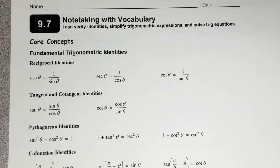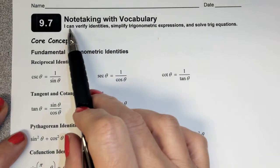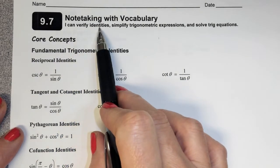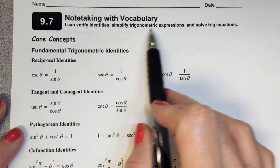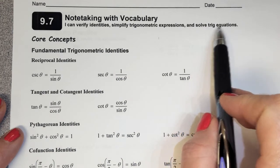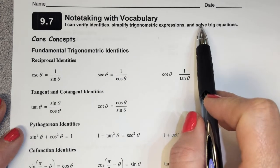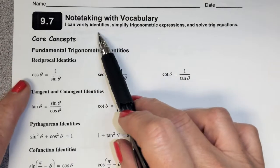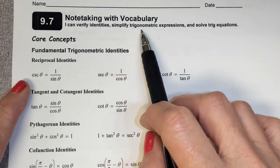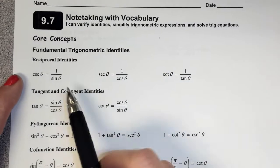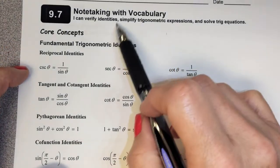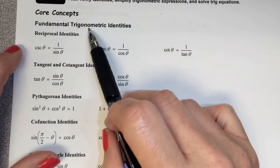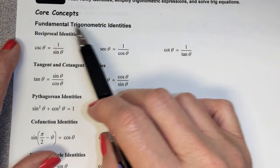All right guys, so we're looking at section 9.7. Our goal today is to be able to verify identities, simplify trigonometric expressions, and solve trig equations. We've already done the solve trig equations, so we won't get into that unless we have time. The part about verifying identities and simplifying trigonometric expressions is our main goal. In order to do these two things, you have to understand the fundamental trig identities.